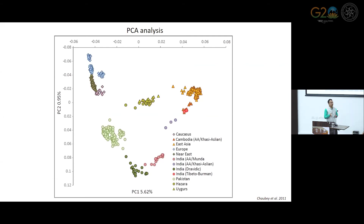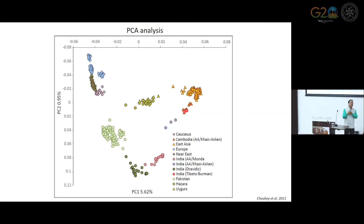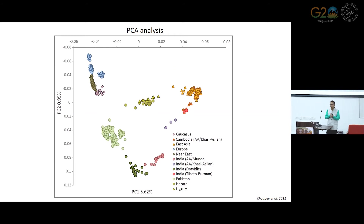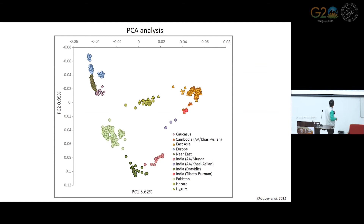We performed principal component analysis with autosomes. Each population usually aligns according to geography. This is very unique for the Indian population — most populations living in China or Southeast Asia align based on their linguistic affiliation, but in India all populations align based on their geography. For example, comparing Punjabi with Keralite populations, they are not different because of their Indo-Aryan or Dravidian language; they differ because of geographic separation.